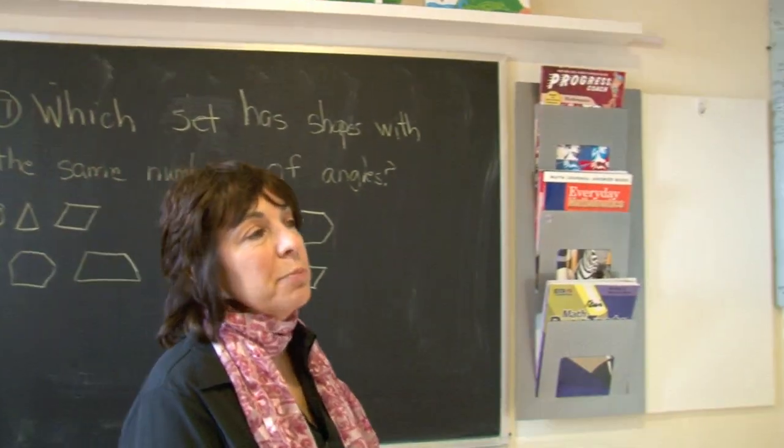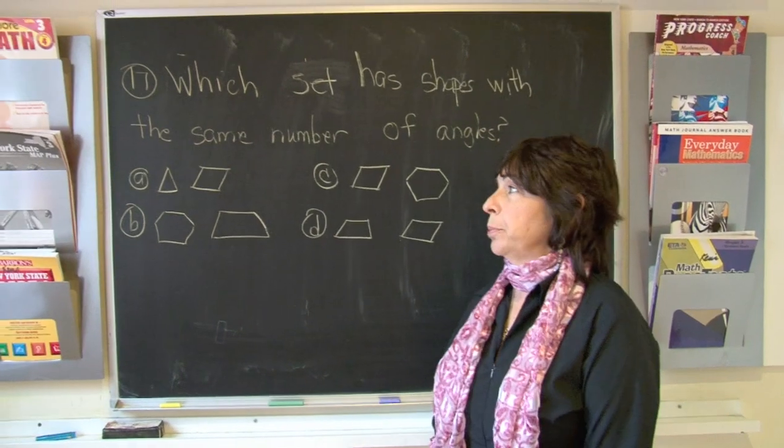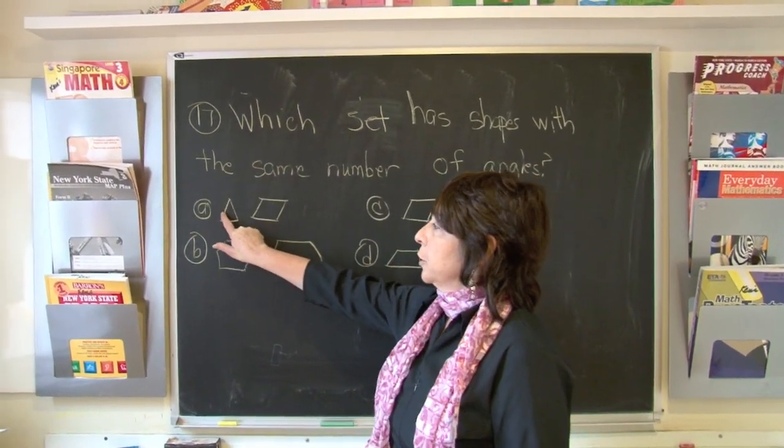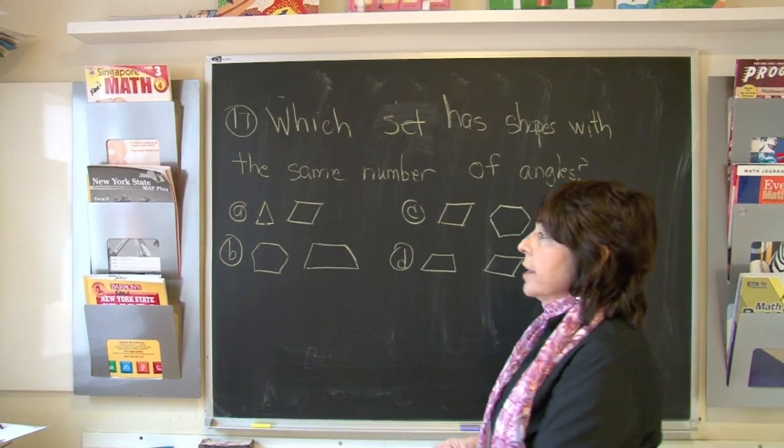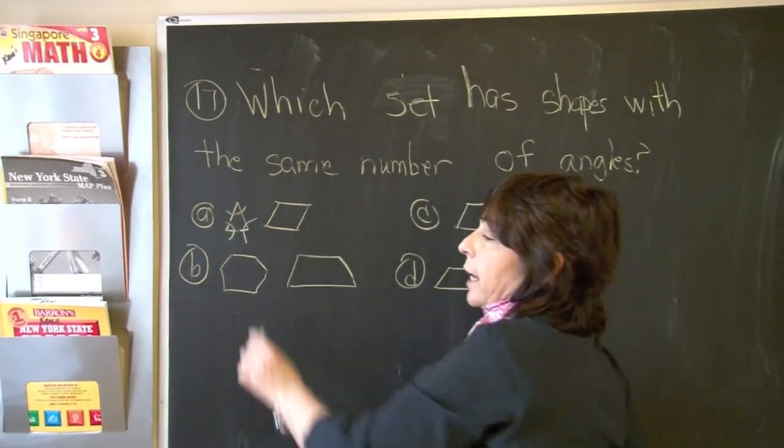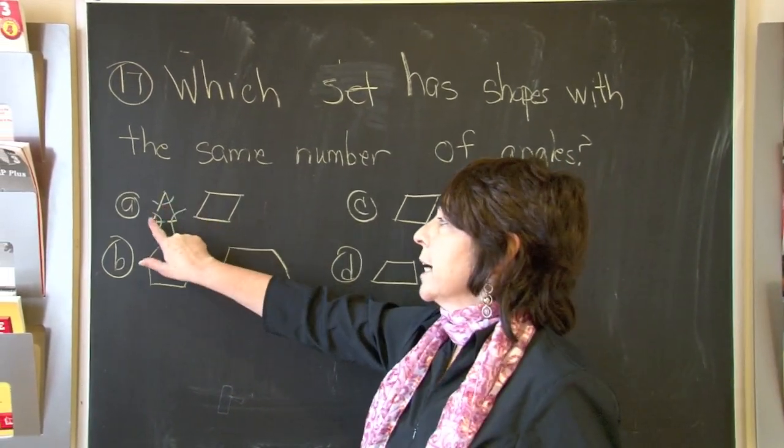Boys and girls, the number of sides determines the number of angles that there will be. So let's look at the triangle. It has one, two, three sides. Therefore, it has three angles, because angles are made when line segments meet at the corner. That is an angle.